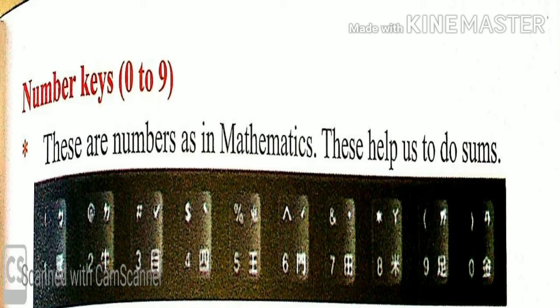So next one is number keys, that is 0 to 9. These are numbers as in mathematics. Numbers are there 0 to 9. We are using them for doing addition, subtraction, division, multiplication. In the same way, these numbers help us to do sums. Same as we are doing in mathematics, here also we can do the sums with the help of the number keys, that is 0 to 9.